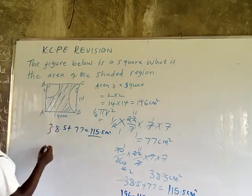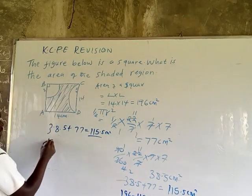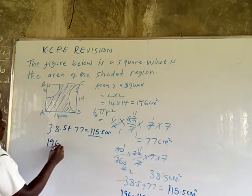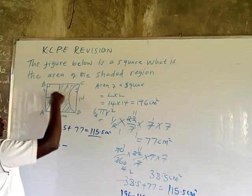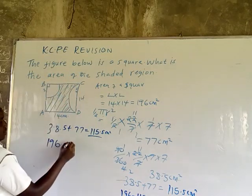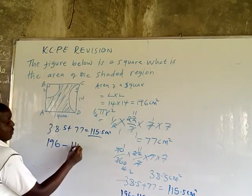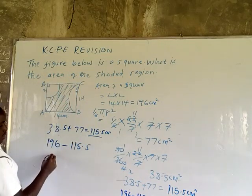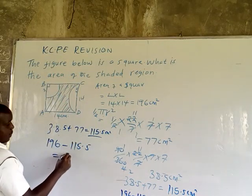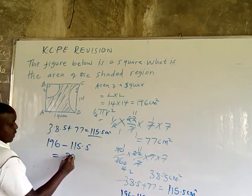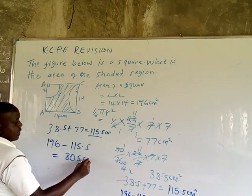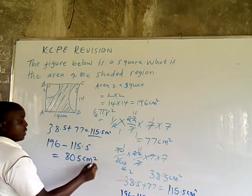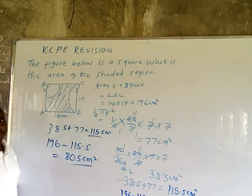The total area of the square was 196 cm². Now we subtract the total unshaded area, which is 115.5. This gives us 80.5 — wait, it gives us 70.5 cm².